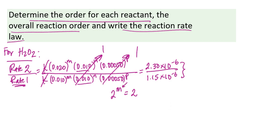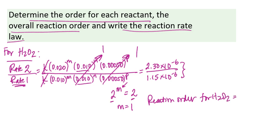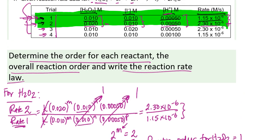What that leaves me with is 0.020 divided by 0.010, which is 2, raised to the m power. Dividing the rates, 2.30 × 10⁻⁶ divided by 1.15 × 10⁻⁶ equals 2. So 2 to the m equals 2, and the only exponent that gives this result is m = 1. That means the reaction order for hydrogen peroxide in this reaction is first order.